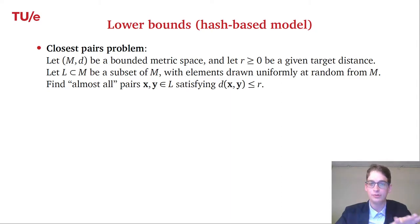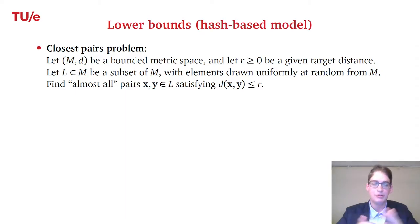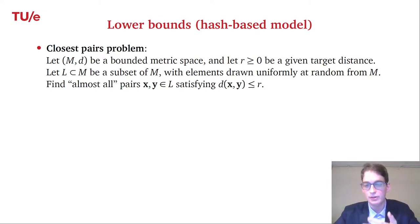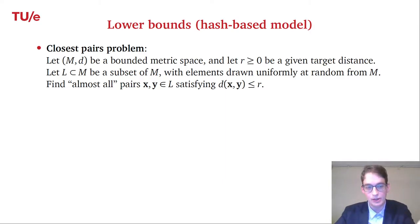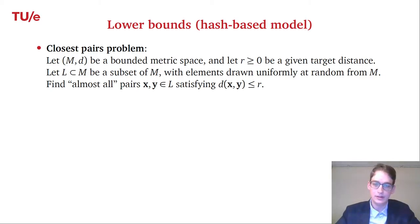In the remainder of the talk I will briefly sketch the lattice sieving contribution. For the closest pairs problem: we are given some bounded metric space M with a distance metric d, a target distance r qualifying when vectors are nearby, and a list L which is a subset of M with elements drawn uniformly at random — so we consider average-case rather than worst-case settings.